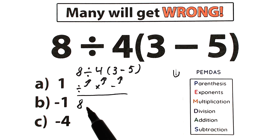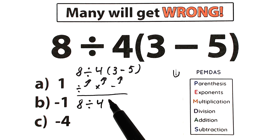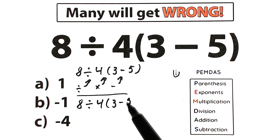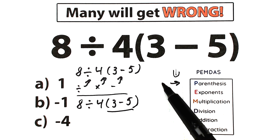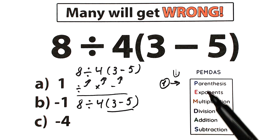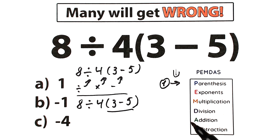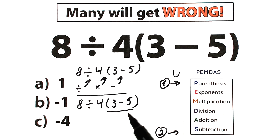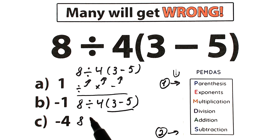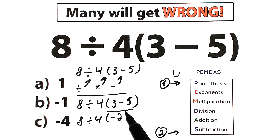So let's solve the challenge according to PEMDAS. Our expression is 8 divided by 4 times (3 minus 5). As you can see, we have parentheses here, so first we evaluate the expression inside parentheses — this is our first step. Inside parentheses we have subtraction: 3 minus 5. So our second step is subtraction. We have 8 divided by 4, and inside the parentheses we get minus 2.